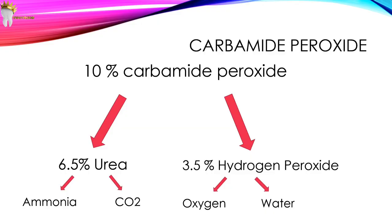Carbamide peroxide works in a slightly different way. A 10% solution of carbamide peroxide breaks down into 6.5% urea and 3.5% hydrogen peroxide. Carbamide peroxide penetrates the enamel and dentine and then the pulp in 5 to 15 minutes, and dissociates into urea and hydrogen peroxide. These two components further break down into molecules metabolized easily by the body — urea breaks down into ammonia and carbon dioxide, and hydrogen peroxide breaks down into oxygen and water.